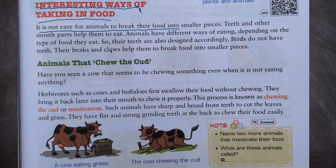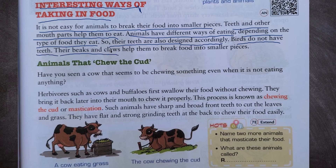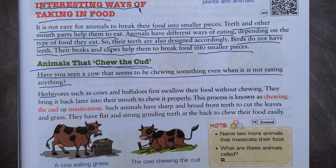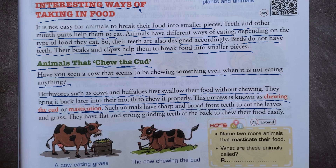It is not easy for animals to break their food into smaller pieces. Teeth and other mouth parts help them to eat. Animals have different ways of eating depending on the type of food they eat, so their teeth are also designed accordingly. Birds do not have teeth — their beaks and claws help them to break food into smaller pieces. Herbivores such as cows and buffaloes first swallow their food without chewing, then bring it back into their mouth to chew it properly. This process is known as chewing the curd or mastication. Such animals have sharp, broad front teeth to cut leaves and grass, and flat, strong grinding teeth at the back to chew their food easily.